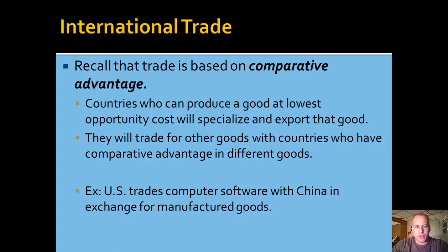They'll trade for other goods with countries who have comparative advantage in different goods. For example, the United States has a comparative advantage in the manufacture of computer software, while China has a comparative advantage in manufactured goods and textiles.